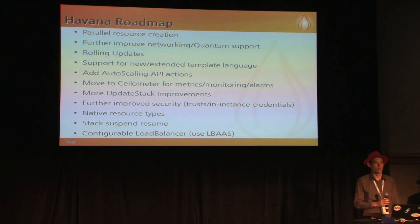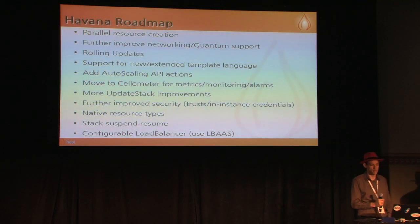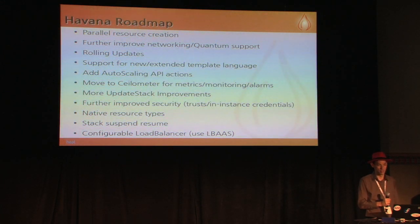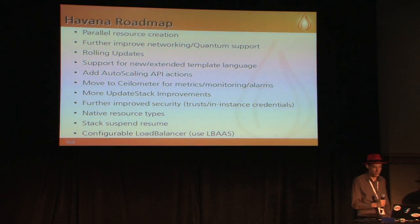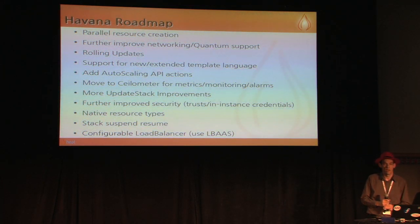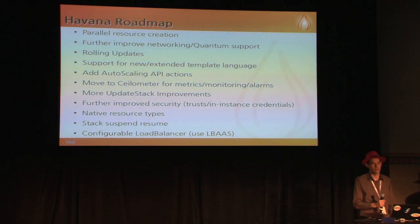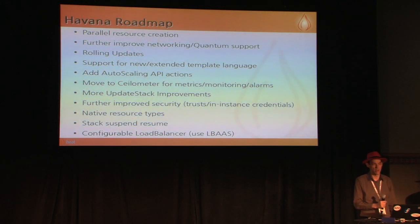Quantum support: Steve Baker in the front row has been working hard on VPC support. The VPC resources from AWS will hopefully be progressing further, and those are evolving in concert with features being added in Quantum. We already have native OpenStack Quantum resources, so if what you're doing maps directly to what Quantum provides, we can support that already. Rolling updates — this is one that Clint is very big on with TripleO. Amazon implemented something similar to this recently: when you're rolling out a very large deployment, you want to be not doing the whole thing in one hit — testing as you go and making sure it's still working. We're going to be looking at implementing a solution for that.